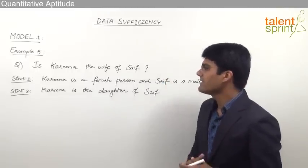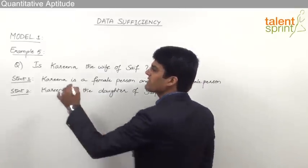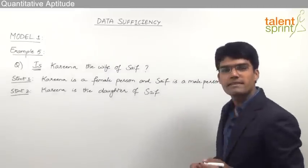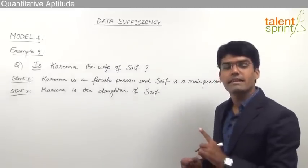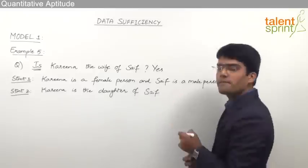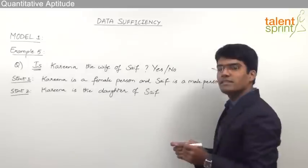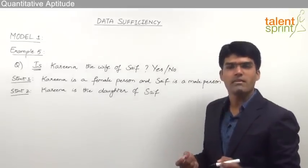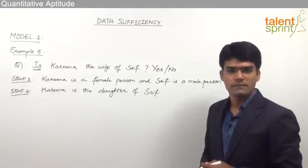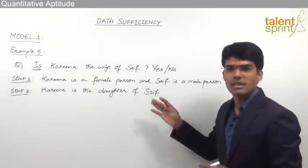The question here is: Is Kareena the wife of Saif? The question starts with the word 'is', so the answer here can be yes or no. That means if Kareena is the wife of Saif the answer should be yes, otherwise the answer will be no. So we need to decide whether the answer is yes or no from the given statements.